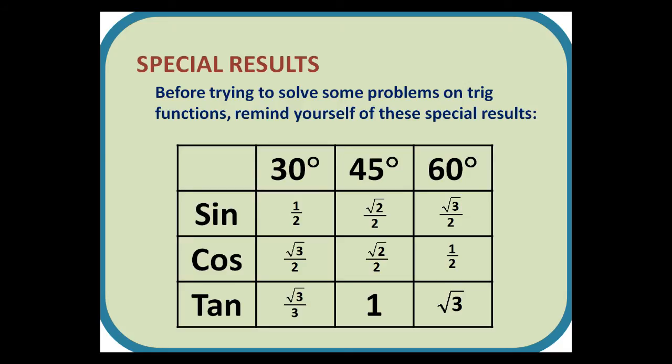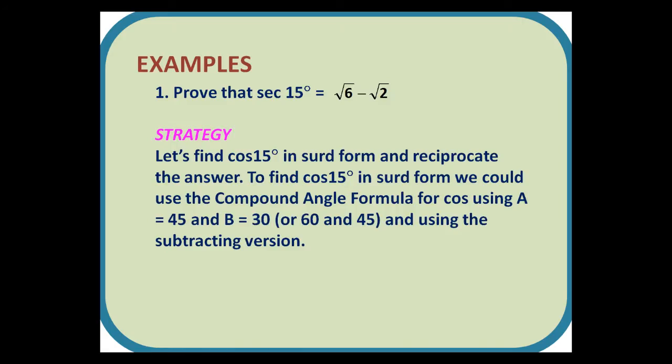Special results. Before trying to solve some problems on trig functions, remind yourself of these special results. Examples. Number one. Prove that sec 15° is √6 - √2. Strategy: Let's find cos 15° in surd form and reciprocate the answer.